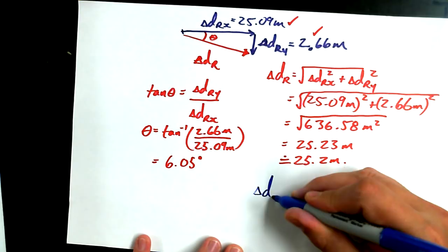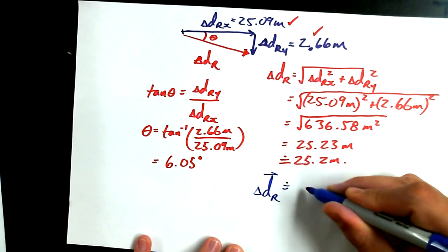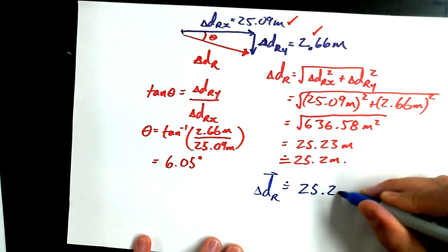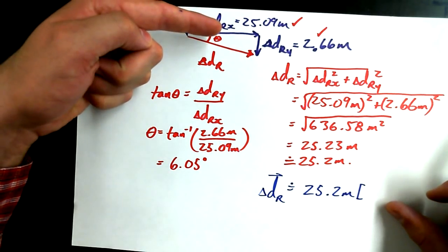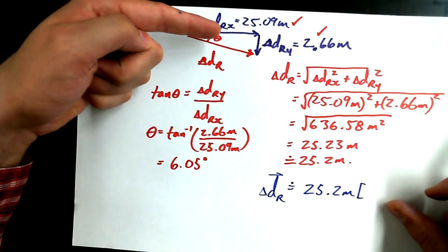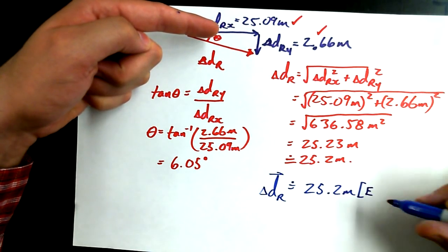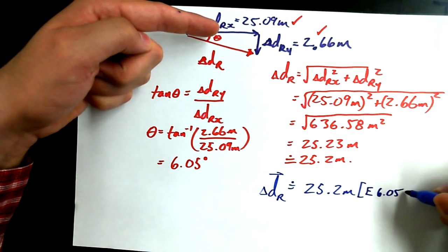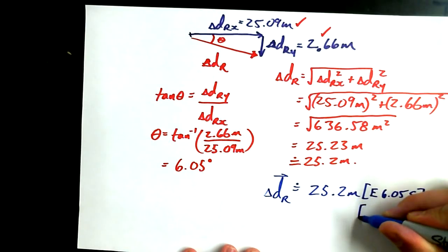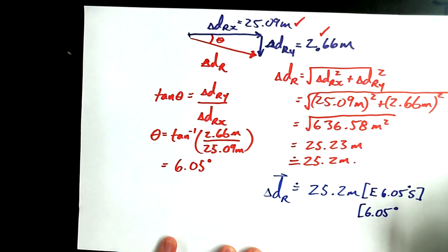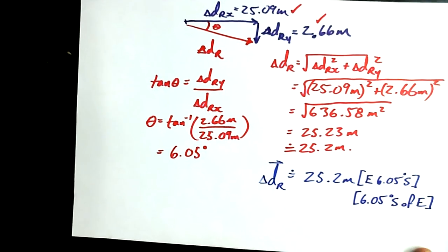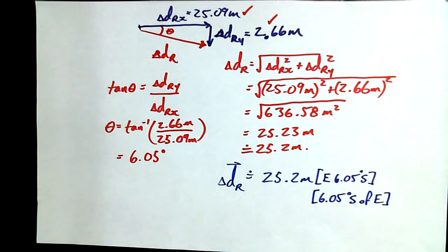So if I want to express this as a final answer I'd write delta D resultant with an arrow over top is equal to approximately 25.2 meters and now with my square brackets how would I start this off? Point yourself east and rotate how much? East 6.05 degrees south or the other way of writing it would be starting with the angle 6.05 degrees south of east. Two alternative ways of saying direction. Everybody happy?